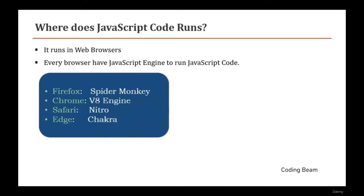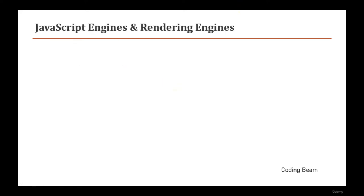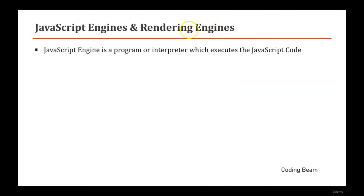Every web browser has a JavaScript engine to run JavaScript code. Firefox has SpiderMonkey, Chrome has the V8 engine, Safari has Nitro, and IE has Chakra. So what is the JavaScript engine? It is a program or interpreter which executes JavaScript code.